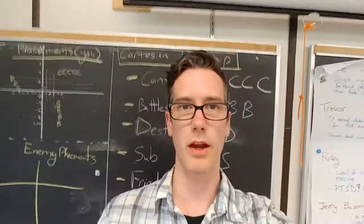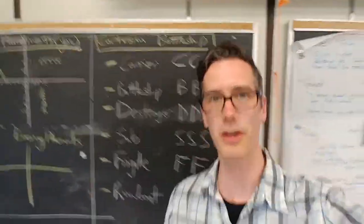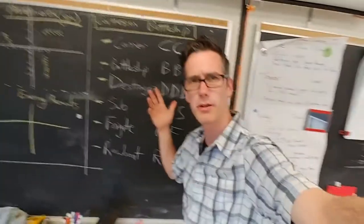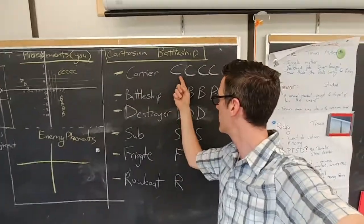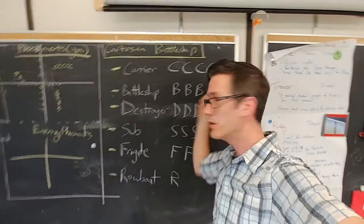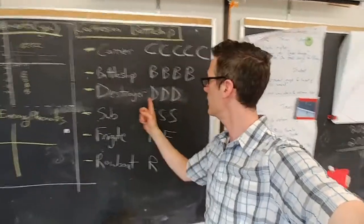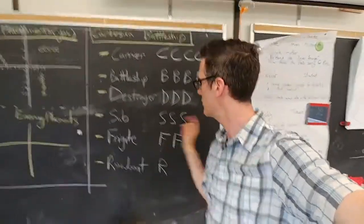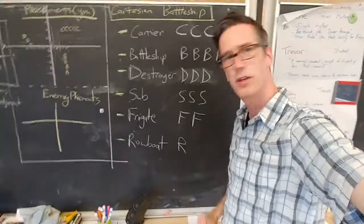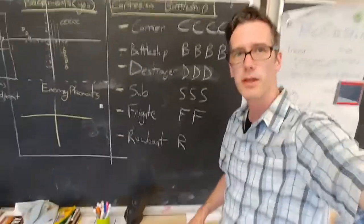I almost forgot. You want to know what ships to use. So here we have our kind of standard one. You can use them if you prefer a different one. So we've got our carrier, which takes up 5 Cs. We've got our battleship, which is 4 Bs. We've got a destroyer, which is 3. We've got a sub, which is 3. We've got a frigate. And of course, no navy is complete without its own little rowboat.